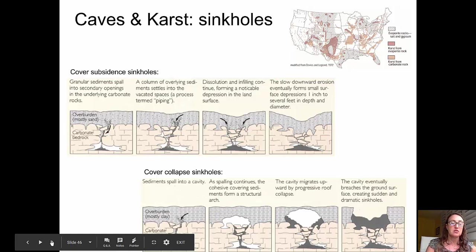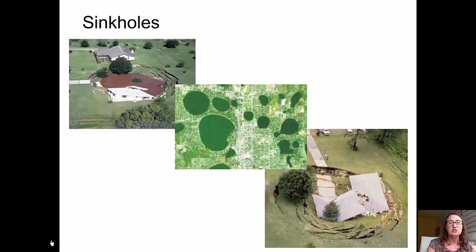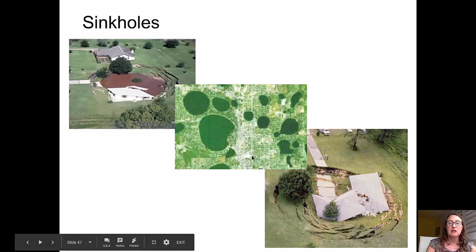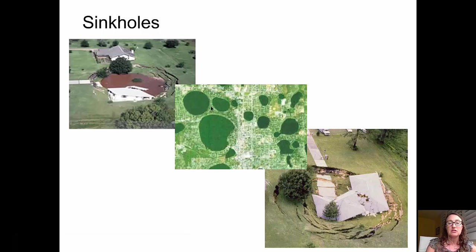We have pictures of houses and other structures that have been taken in by sinkholes. In the middle is an aerial view of sinkholes that have formed lakes in central Florida — they have a typical rounded shape, and each one may be as much as 200 to 300 feet across.